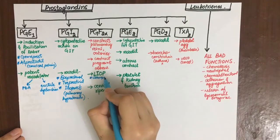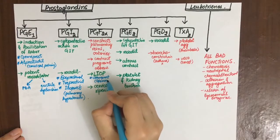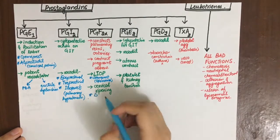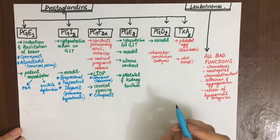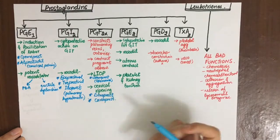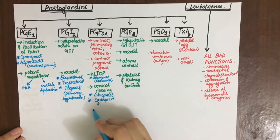PGF2-alpha: latanoprost can be used to decrease intraocular pressure in glaucoma. It's also helpful in abortion and induction of labor, and in postpartum hemorrhage. These are dinoprost and carboprost.